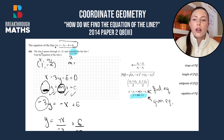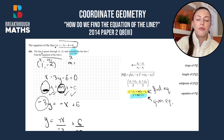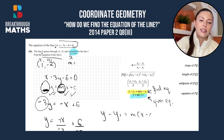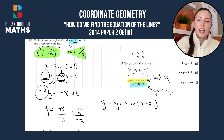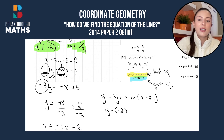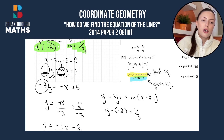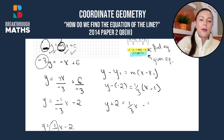Next we need to find the equation of line k. We have a point on the line, so to find the equation we're going to use the first formula: y minus y1 equals m times (x minus x1). We know a point (1, -2) and the slope is 1 third. So we'll have y minus (minus 2) equals 1 third times (x minus 1). Minus minus 2 gives us plus 2. Then 1 third multiplied by x is one third x, and 1 third by minus 1 is minus 1 third.